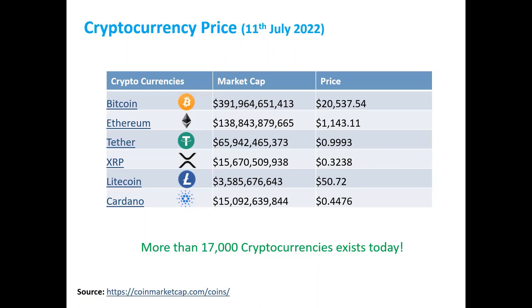You can see that the big cryptocurrencies are Bitcoin and Ethereum. These two make up 60% of the total market capitalization of all cryptocurrencies.